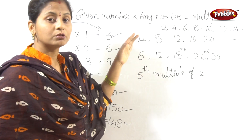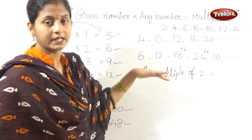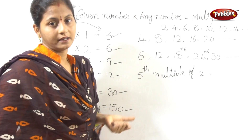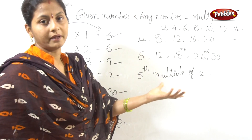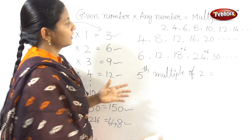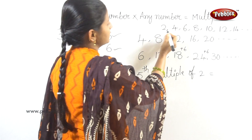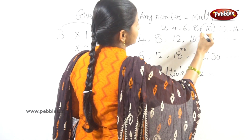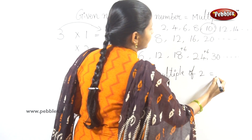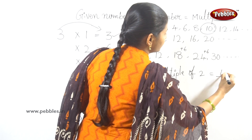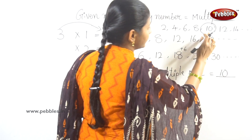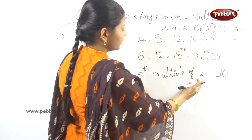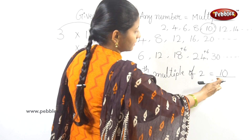If we count 5 times: 1st, 2nd, 3rd, 4th, 5th — in the 5th place, we get 10. So the 5th multiple of 2 is 10. Directly, 5 times 2 equals 10.